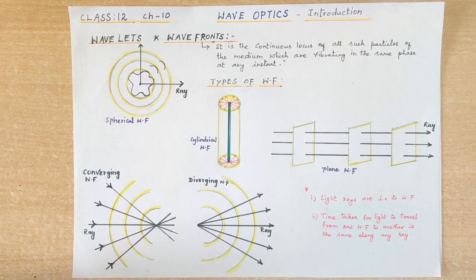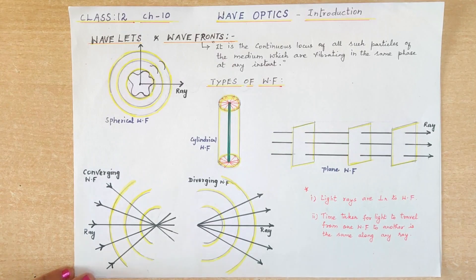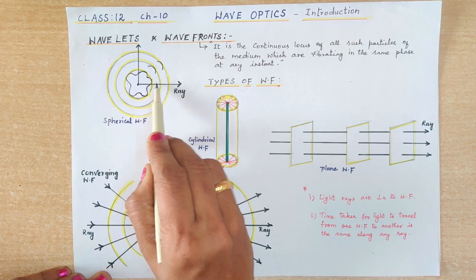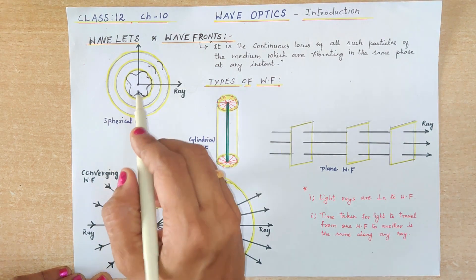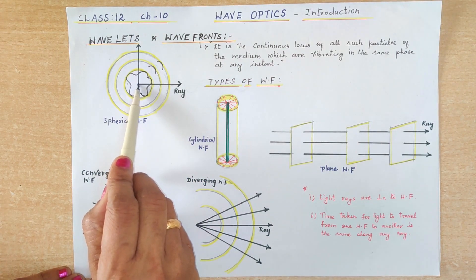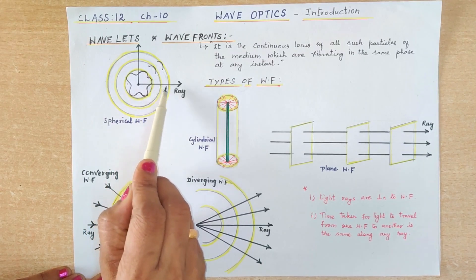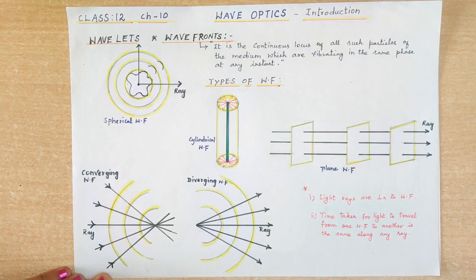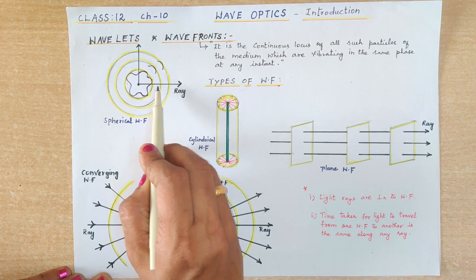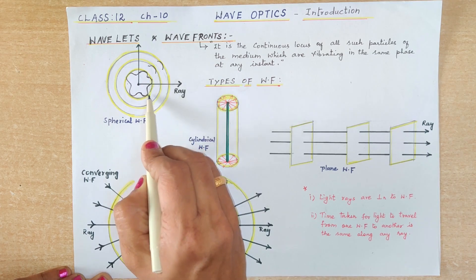We also know that light is transverse in nature. As a transverse wave it has crests and troughs, and when it travels its path is indicated by a ray of light. You can see the rays which I have drawn. We can begin our discussion with an example: a stone when it is thrown on a still surface of water, the disturbance will travel in the forward direction in the form of circular patterns. In the similar way, when a light wave travels, it is a disturbance in the form of crests and troughs.